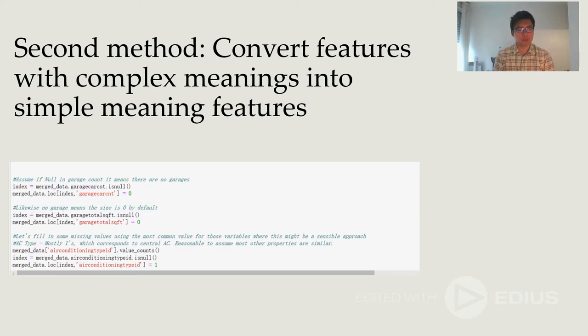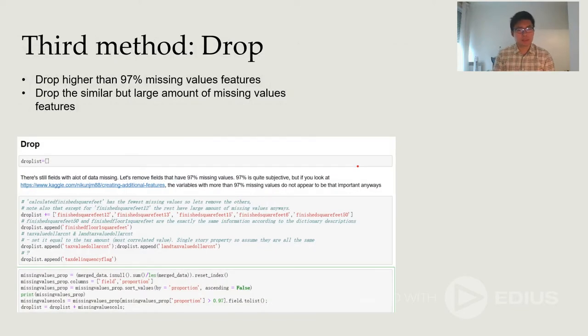The second method is to convert the feature with complex meaning into simple meaning features, so that we can reasonably fill in missing values. For example, for the count of garage car feature, we assume that if null in garage count, it means there are no garage. So, we set it to zero. The third method is to drop high percentage missing value feature and drop the similar but huge amount of missing value feature.